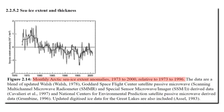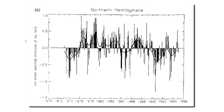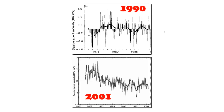In the 2001 report, a lot of ice magically appeared around the year 1974 which didn't exist in their prior report. This graph shows the data tampering which occurred between 1990 and 2001.